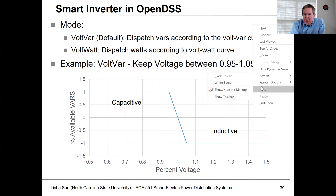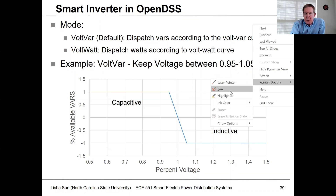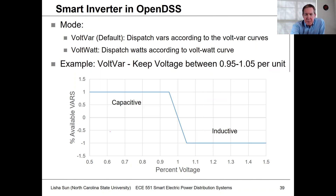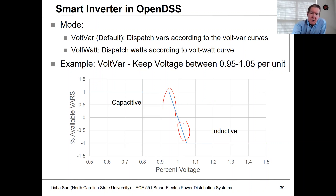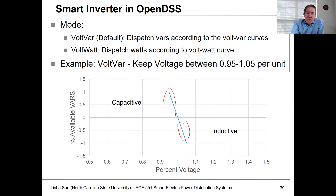In this application, if the voltage gets too low, we're going to push in reactive power. If the voltage gets too high, we're going to sink reactive power. So we're going back and forth between injection and absorption mode.